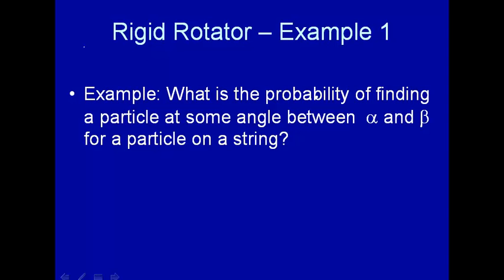We want probability, and we know if we square the wave function we get probability density. If we take that probability density and multiply it by that difference in angle, then we'll get the probability. Let's go ahead and do that.